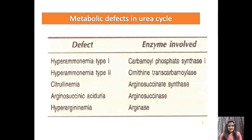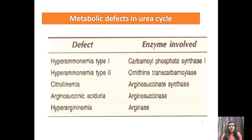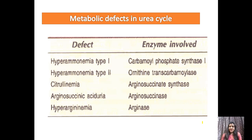Now we will see the metabolic defects of the urea cycle. These defects are: hyperammonemia, citrullinemia, arginosuccinic aciduria, and hyperarginemia. These defects occur when there is a deficiency of a particular enzyme in the cycle.